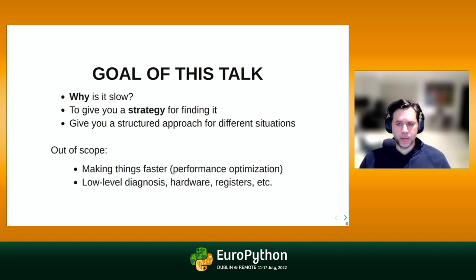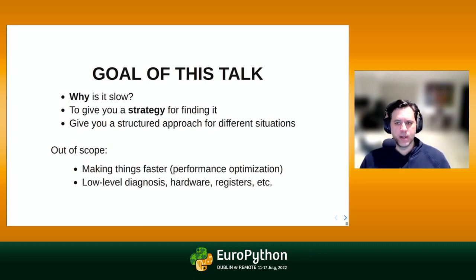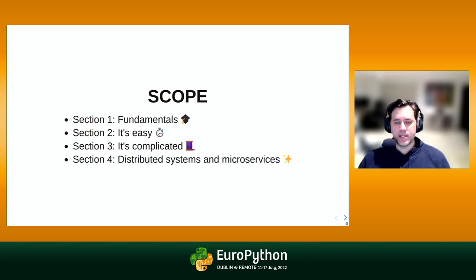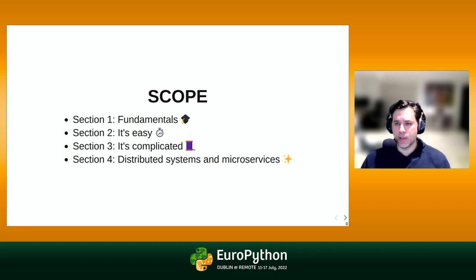The goal of this talk is to give you a bit of my experience over the years trying to solve performance problems and a strategy for how to approach the problem. I want to give you structure for how to think about this in different scenarios, but I'm not going to talk about how to actually make things faster or any low-level hardware issues. The talk is broken into four sections: fundamentals, when code is easy to run, when it's not, and distributed systems and microservices.